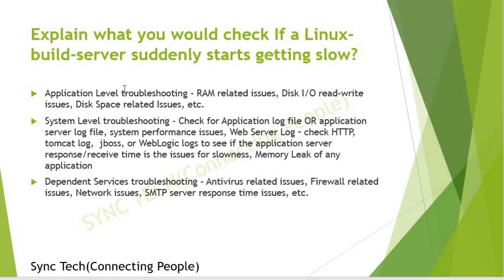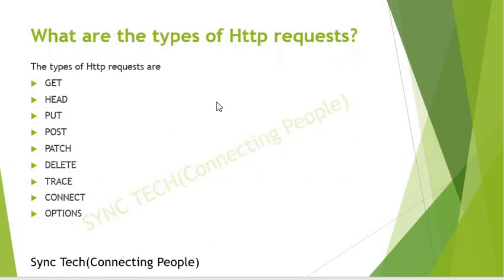Moving on to the next question: what are the types of HTTP requests? As per my knowledge I have used around 6 to 7 of them: GET, HEAD, PUT, POST, PATCH, DELETE, TRACE, CONNECT, and OPTIONS.